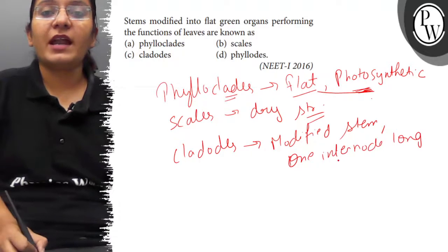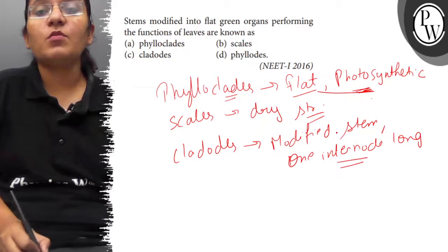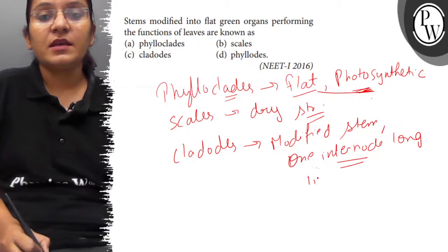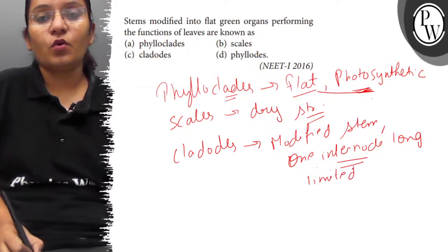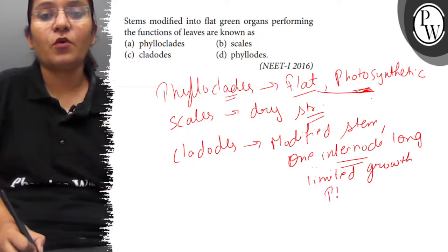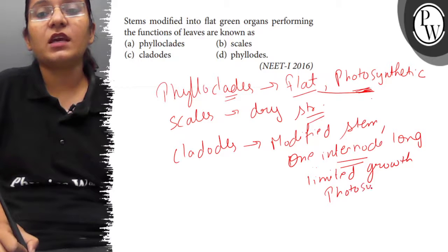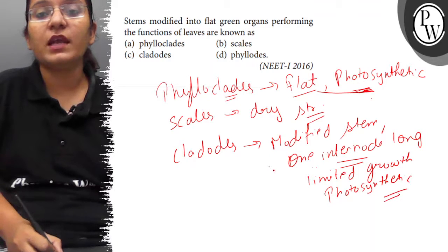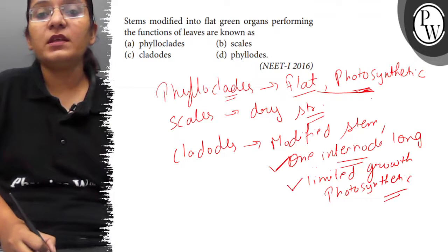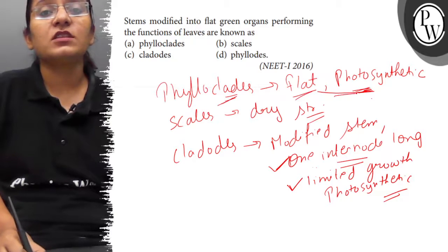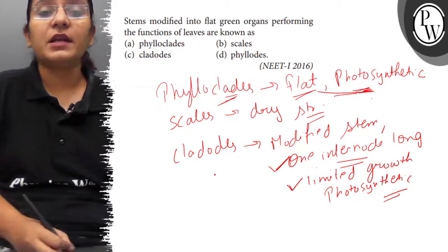In cladodes, the modified stem is one internode long, meaning limited growth, and it becomes photosynthetic with chlorophyll present. It takes the function of leaf but it is not flat - it is only one internode long with limited growth, while phylloclades have flat photosynthetic stem with unlimited growth.